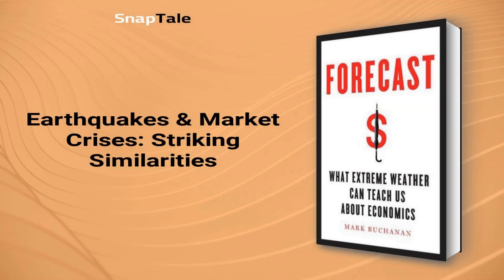Earthquakes and Market Crises — Striking Similarities. Surprisingly, major earthquakes and market crises share several remarkable similarities despite being distinct phenomena. Both are notoriously challenging to predict, and devastating events occur less frequently than moderate counterparts throughout history. Furthermore, the aftermath of these two events presents analogous patterns. In the case of earthquakes, the likelihood of an aftershock decreases over time, with the highest chance occurring immediately after the main event. Similarly, financial markets experience a higher probability of significant fluctuations immediately following a major crash, with this likelihood decreasing as time passes. Acknowledging these parallels could provide economists with valuable insights from earthquake research.